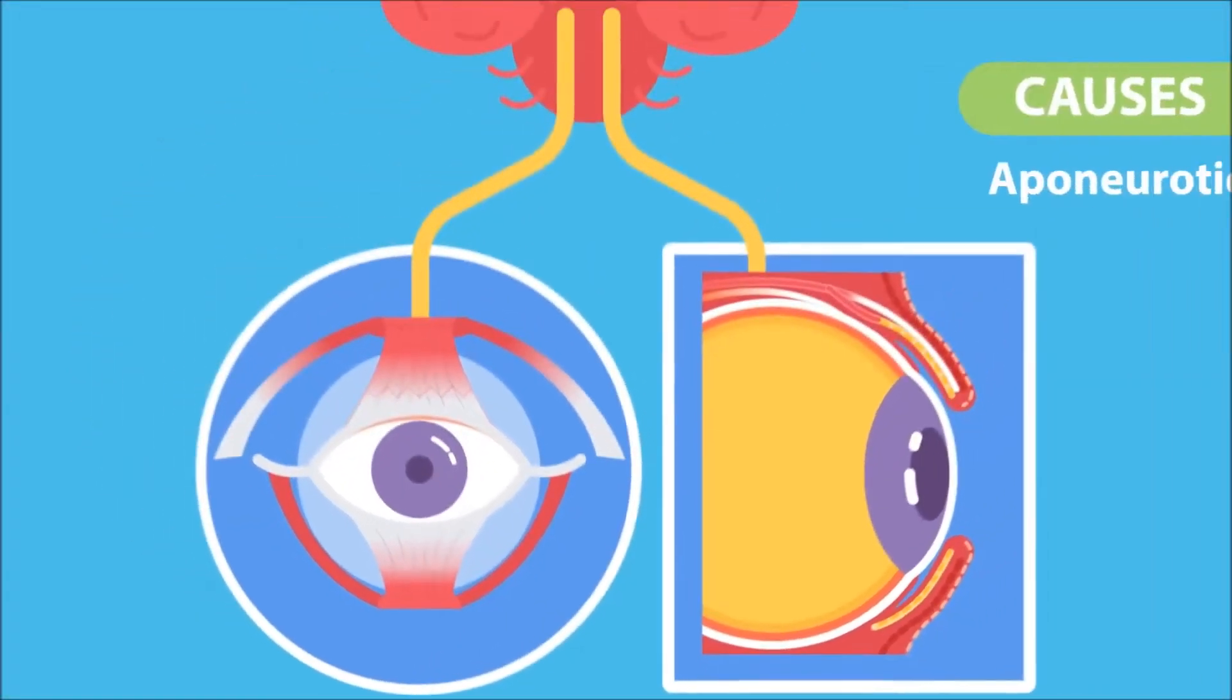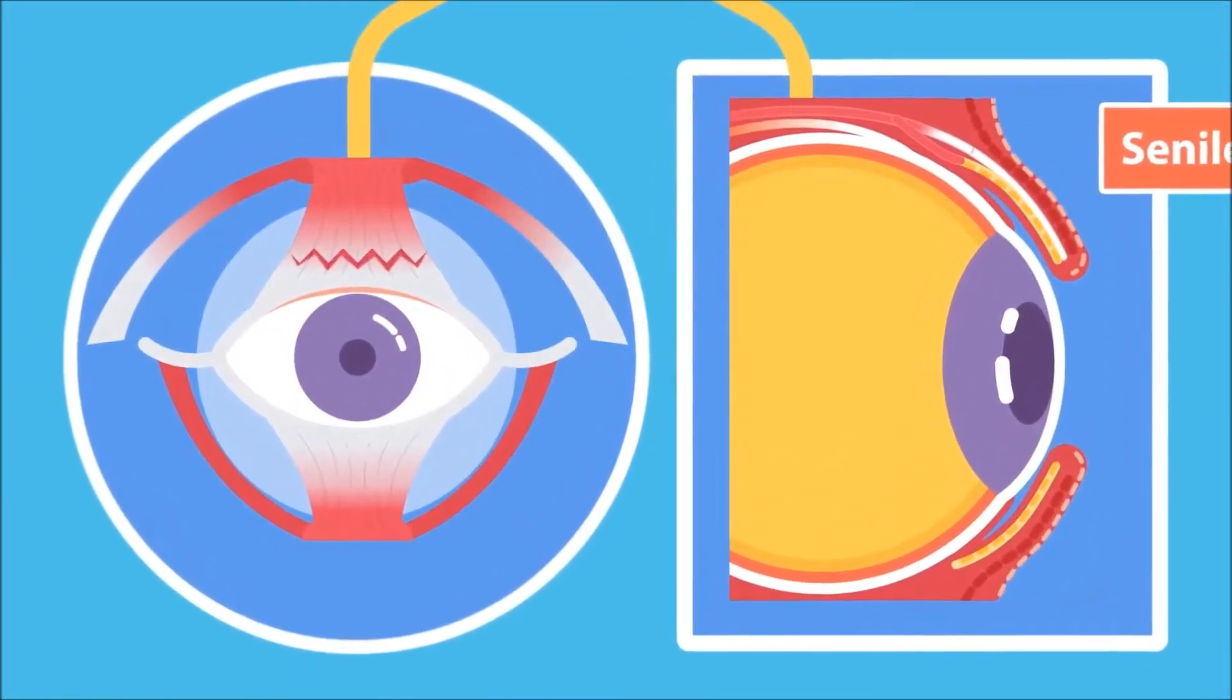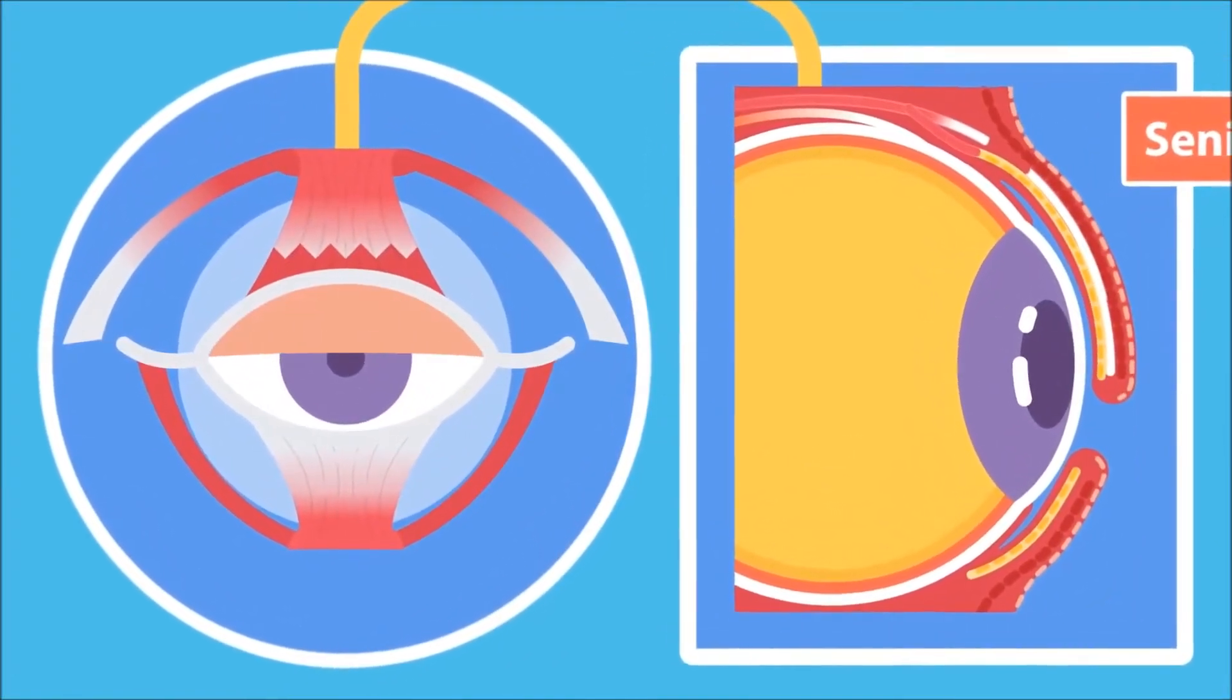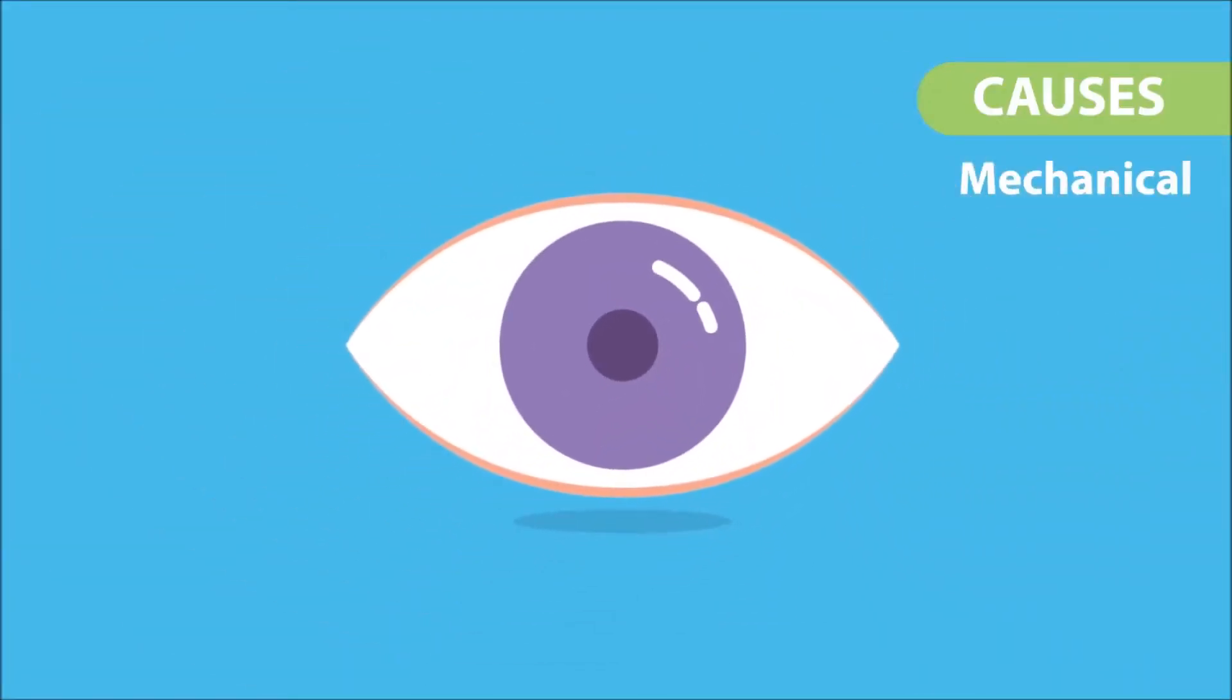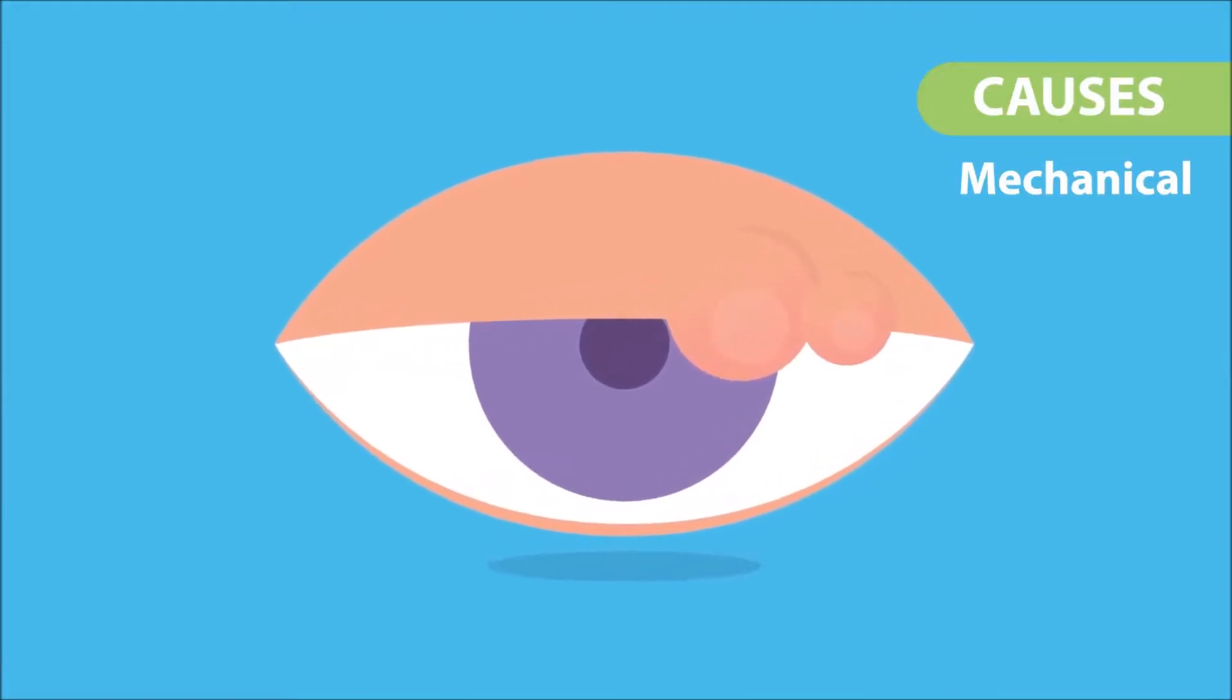Three: aponeurotic, also known as senile ptosis, in which there is age-related atrophy of the levator muscle aponeurosis. Four: mechanical. Gravitational effect of a mass pulling the lid down, for example due to a tumor.